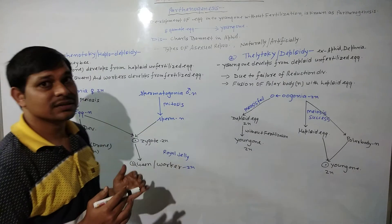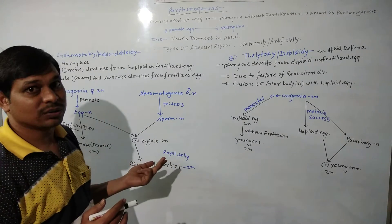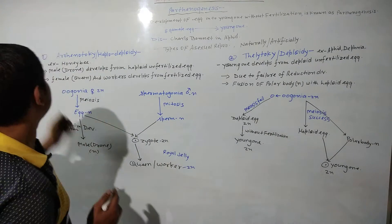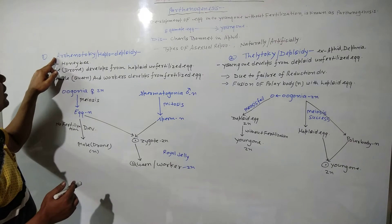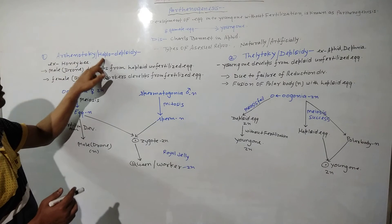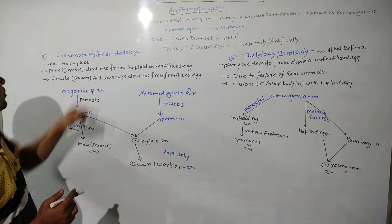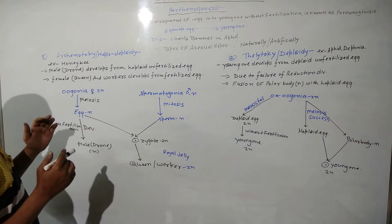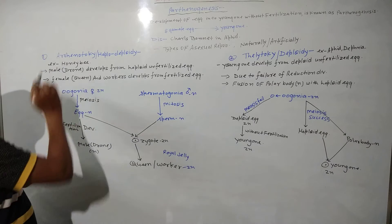Parthenogenesis is of two types. The first is Arrhenotoky, which is Haplodiploidy. Haplodiploidy is seen in the Honeybee case.